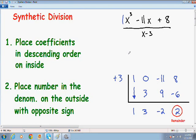So your final answer always starts one degree less than in your numerator. So since we have a highest degree of 3 in our numerator, since we have a 3 exponent as our largest, our answer is going to start one degree less. So it's going to start with a degree of 2.